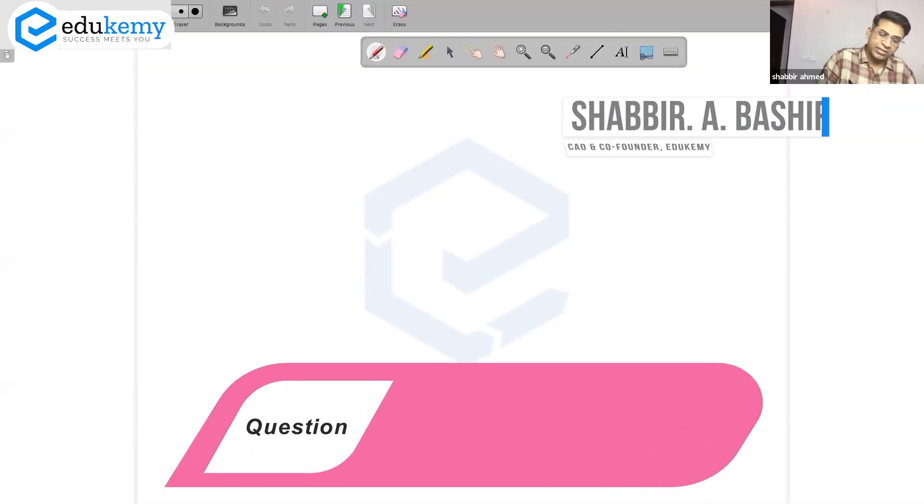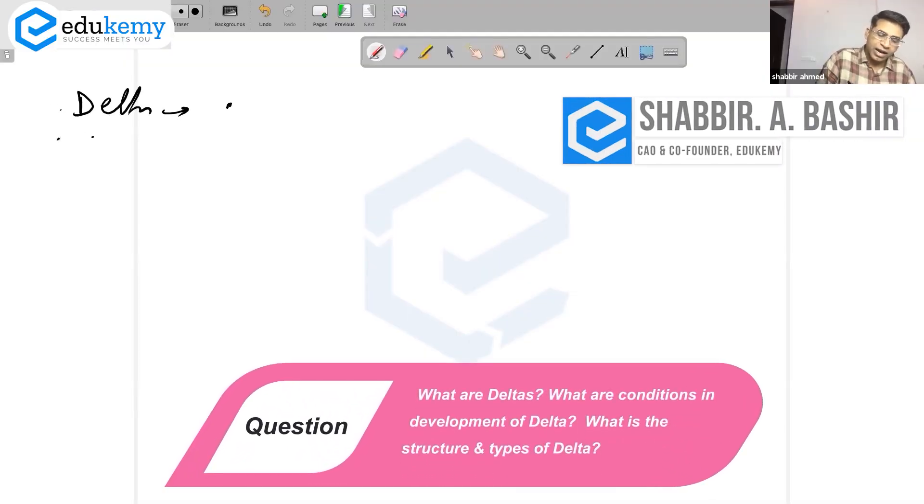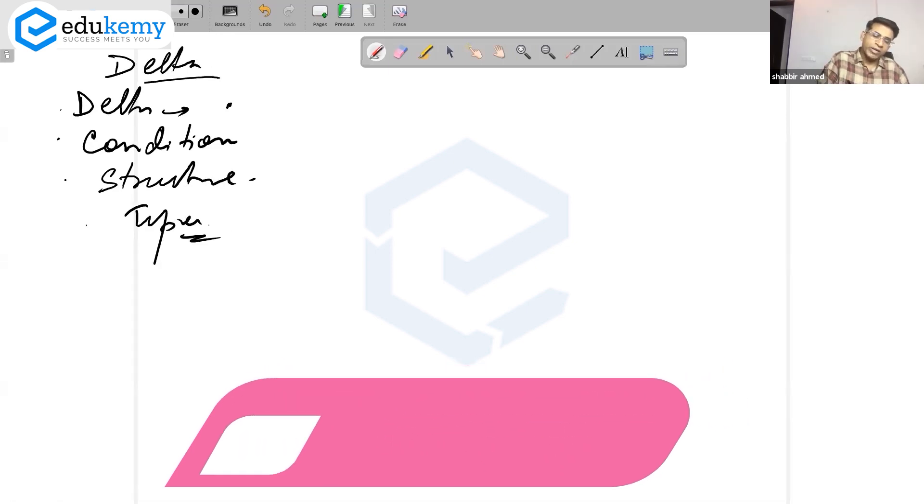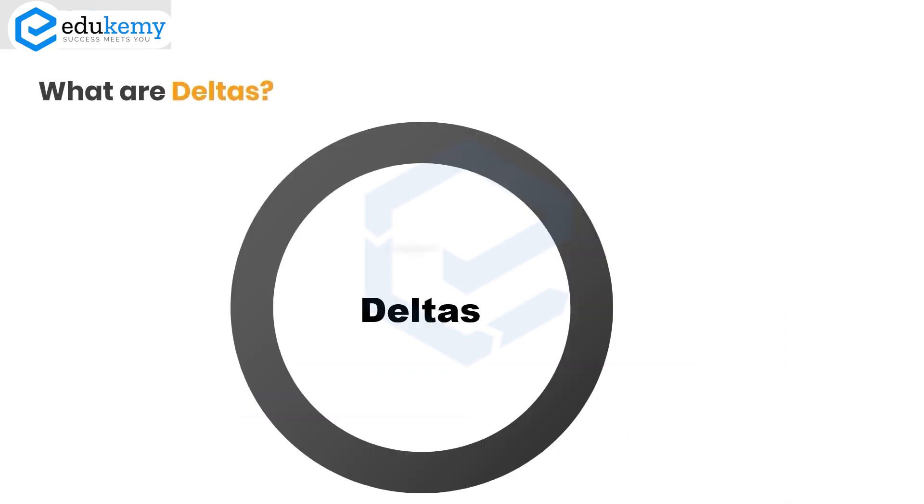What are deltas? What are the conditions in the development of deltas? What is the structure of the delta and what are the types of deltas? Delta could be an important question for you. What are deltas?